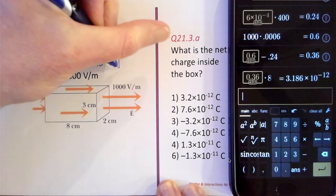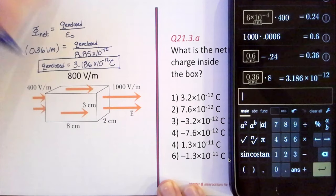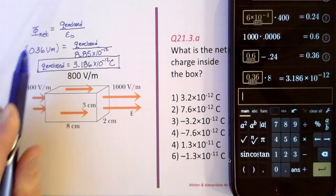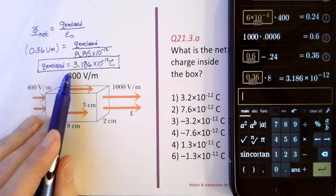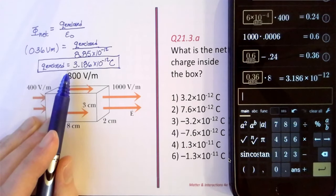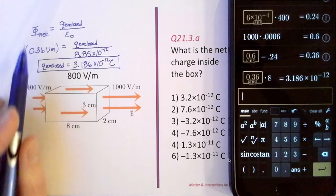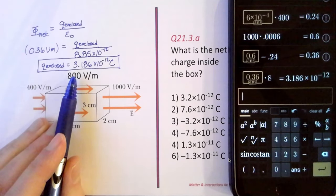And notice that since the net electric flux in this case was positive, the charge enclosed is going to be positive. If the net electric flux had been negative, then the charge enclosed would be negative.